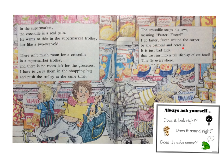Buy the owls and cereals. Hang on, let's stop there. 'Buy the owls and cereals' — owls starts the same as this word. 'Buy the owls' — that's how we talk, so it sounds right. But does it make sense? Would there be owls in the supermarket? No. So let's go back and have a look at it again. I know — oatmeal. I go faster, faster around the corner. Buy the oatmeal and cereals.